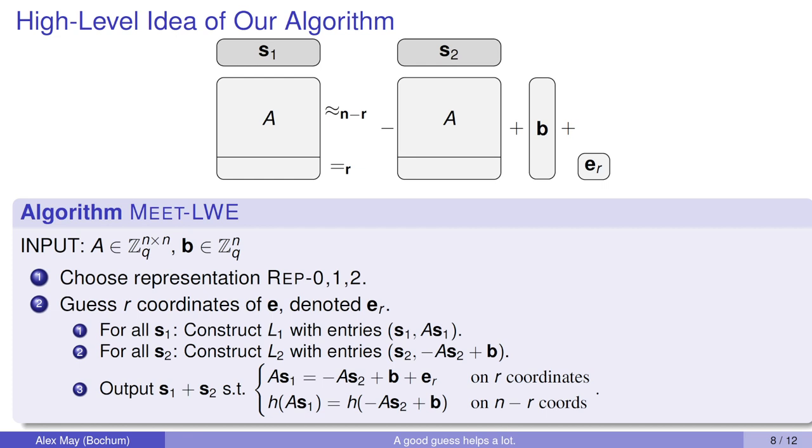I want to show you the main idea of our new algorithm, which is called meet-LWE for ternary LWE keys. We want to use representation. We use a full-size splitting of S as S1 plus S2, both being n-dimensional vectors. We get an identity A times S1 is minus A times S2 plus B plus the error vector. The idea is to check this identity on n-coordinates approximately and on r-coordinates exactly. For these r-coordinates, we have to know the r-coordinates of the error vector E, which are denoted here by ER.